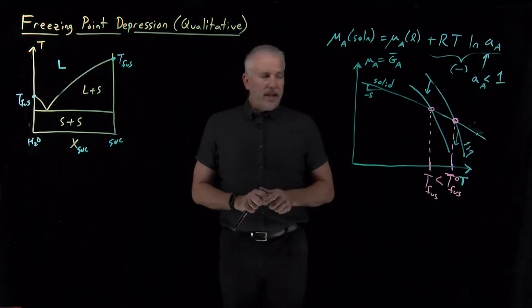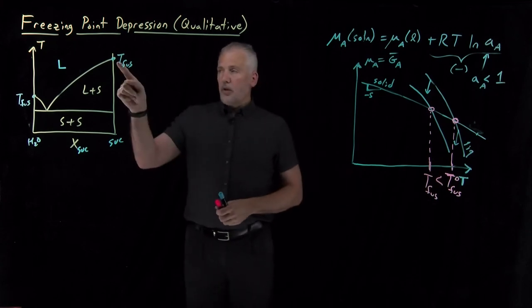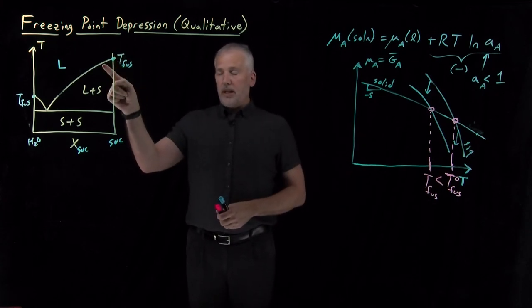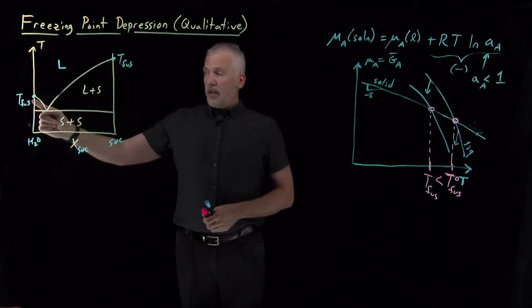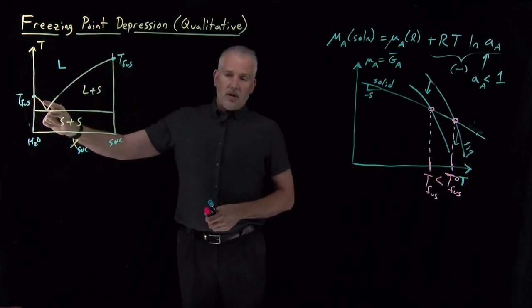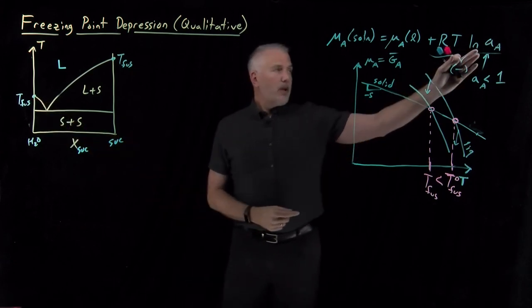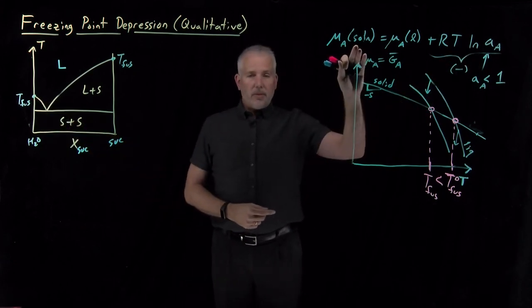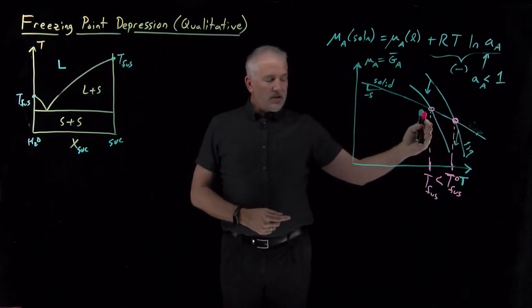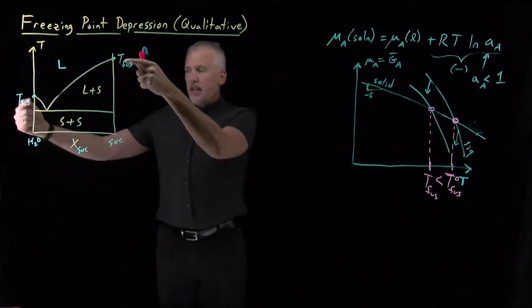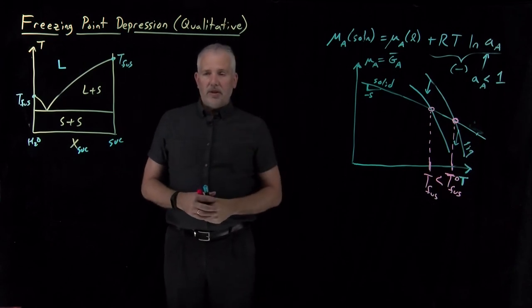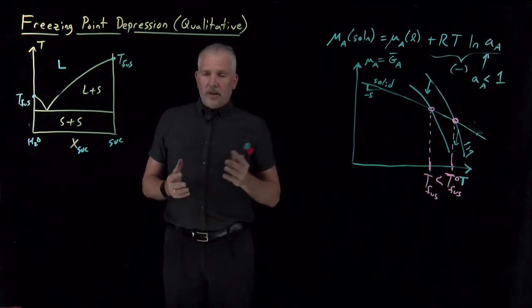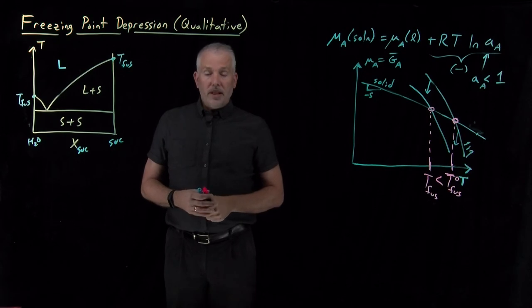So qualitatively, we understand now: any time, regardless of whether I'm starting with pure sucrose and make it impure, I've lowered the sucrose's activity. If I start with pure water and dissolve sucrose in it, I've lowered its activity. Any time I lower the activity, I'm going to lower the chemical potential. And that's what causes the melting point to decrease in both directions. Now we understand why dissolving a solute into a solvent will decrease the freezing point.